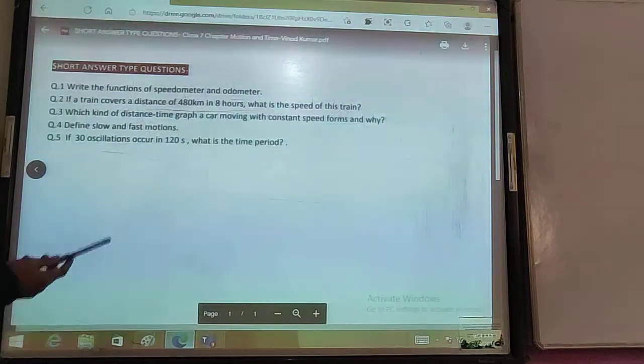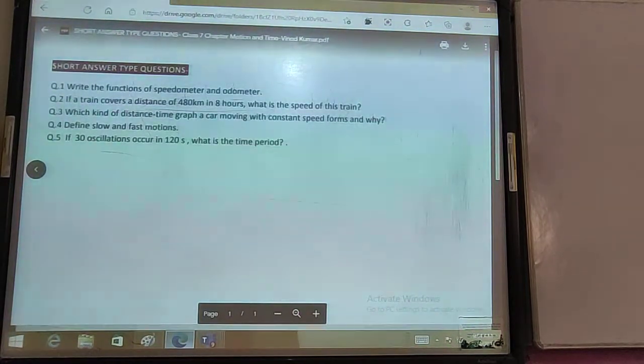This is the graph that will be for defining slow and fast motions. If it takes 3 hours of time, the graph of fast will be this and the graph of slow will be this.